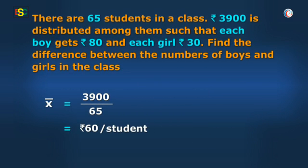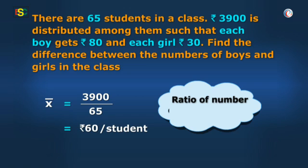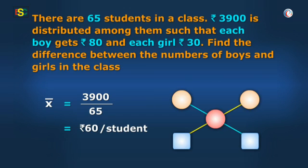Now, Vidya, find the ratio of number of boys and girls in the class through allegation tool. Baba, here B is equal to 80, G is equal to 30 and weighted mean is 60.